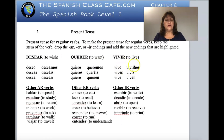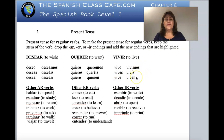For -ir verbs — it's the same thing. The example is vivir: yo vivo, tú vives, él vive, ella vive, usted vive, nosotros vivimos, vosotros vivís, ellos viven, ellas viven, ustedes viven. If I want to say 'I live in Orlando, Florida,' it's yo vivo en Orlando, Florida. Or yo vivo en Seattle.